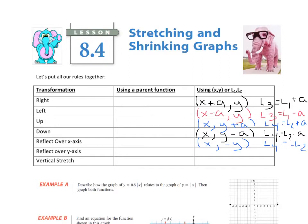And if I look at reflected over the y-axis, that means the x values change signs to their opposite. So that means I have a negative x, because I'm going to change the sign of x, and the y stays the same. So that would mean I would have L3 — because that's my x values — equal to a negative L1.